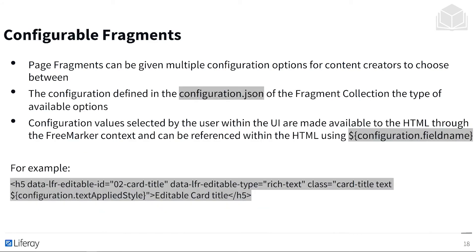We also have configurable fragments. Page fragments can be given multiple configuration options for content creators to choose between. The configuration is defined in the configuration.json of the fragment collection. Configuration values selected by the user in the UI are made available to the HTML through the FreeMarker context and can be referenced using configuration.fieldname. As you can see in the example, we have code that allows editing the card title using configuration.textAppliedStyle.